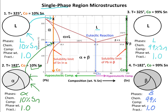Moving to a different overall composition and temperature — given these conditions, that puts us in the liquid region. The phase present is liquid, the chemical composition is 99% tin, and the phase weight fraction is 1.0. Notice it looks exactly the same as the other liquid; the only difference is the chemical composition.